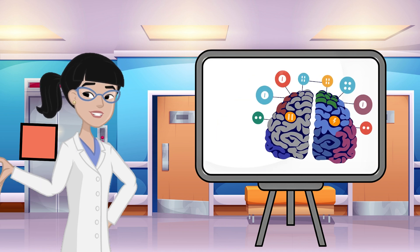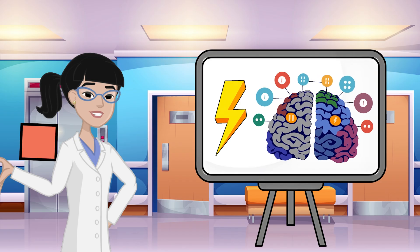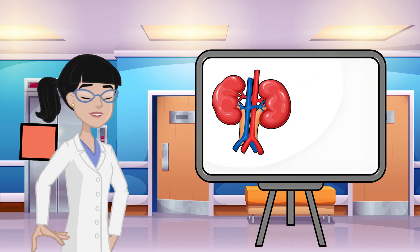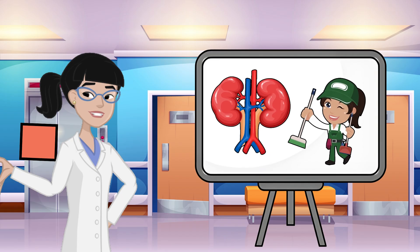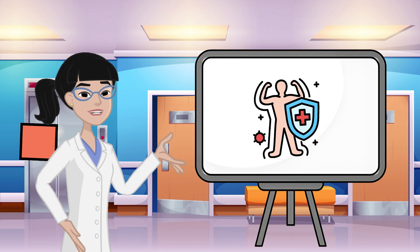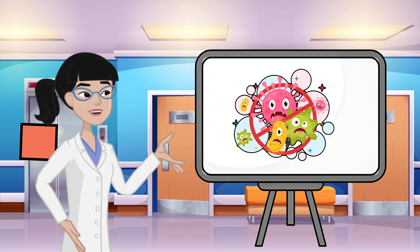Your brain also sends messages super fast, like lightning, to help you move and react. Your kidneys and liver are like tiny cleaners that help wash away waste from your body. Your immune system is your superhero shield, fighting germs and keeping you healthy.